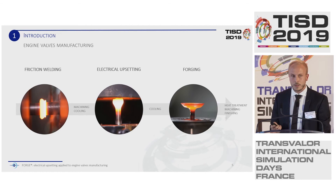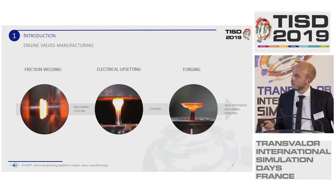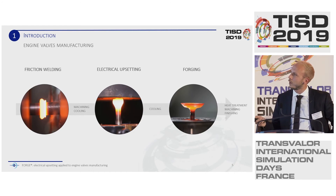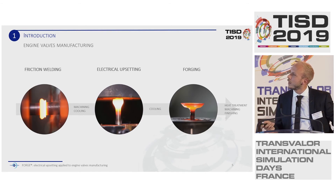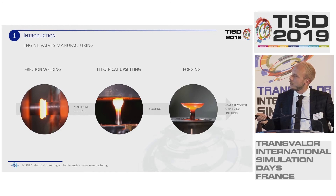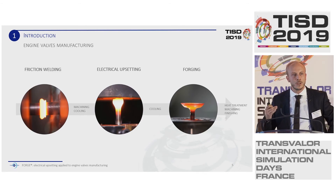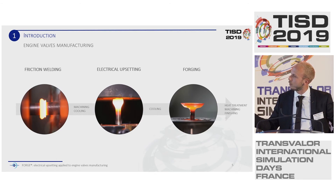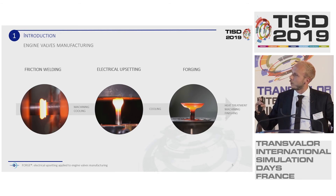The engine valve undergoes a large number of forging and heat treatment operations to guarantee its mechanical properties. The manufacturing process is divided into three forming operations. The first is friction welding, where two parts made of different steels are joined together by friction. Then there is the electrical upsetting, which produces a pre-shape. That pre-shape is then forged on a screw press to get the final valve shape. After these forming operations, there are several heat treatments including induction heating and quench for hardness, and polishing operations to improve air flow.